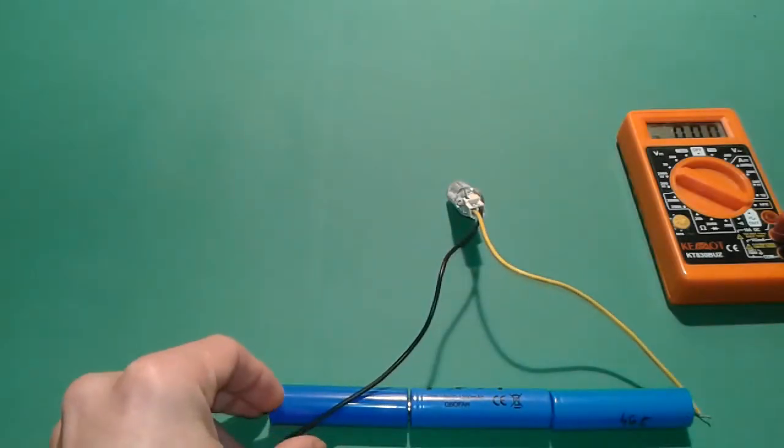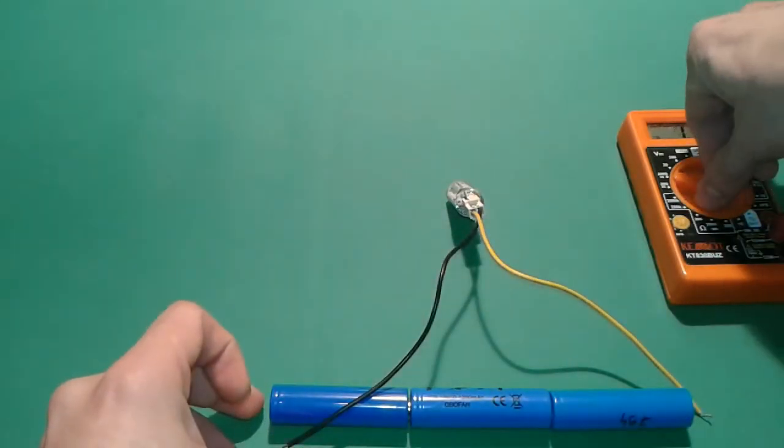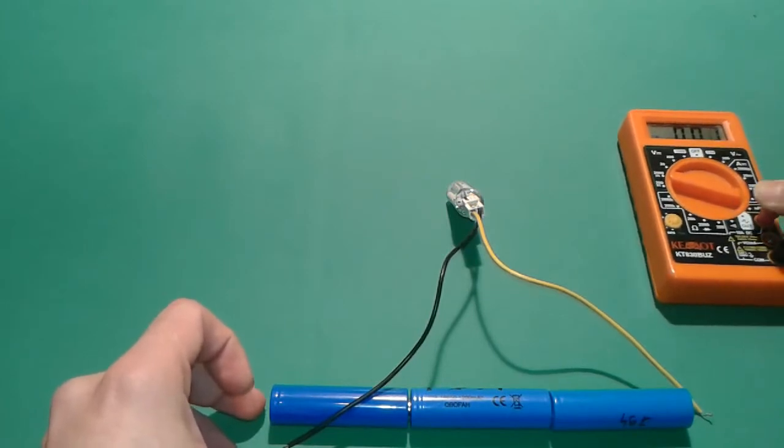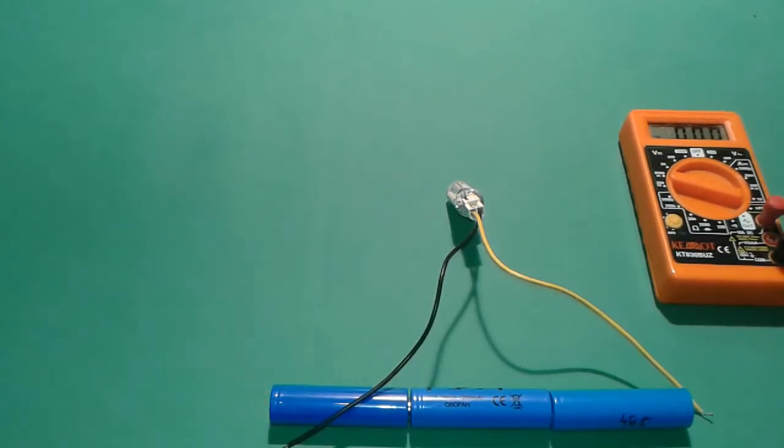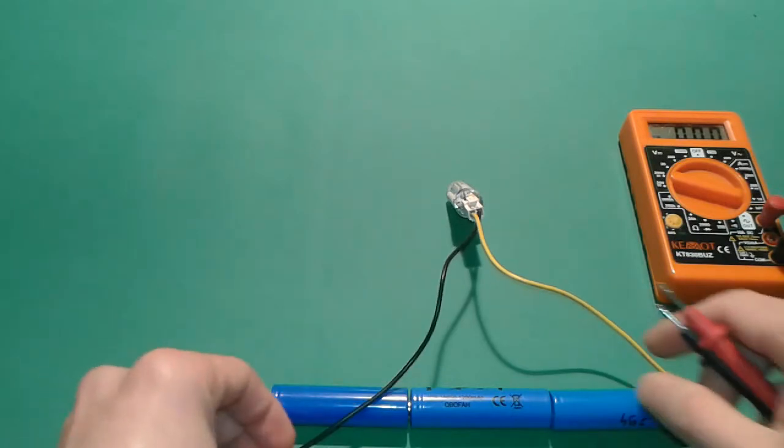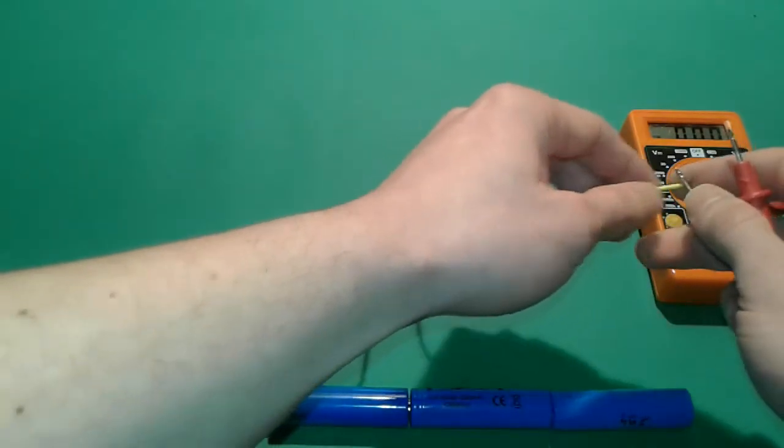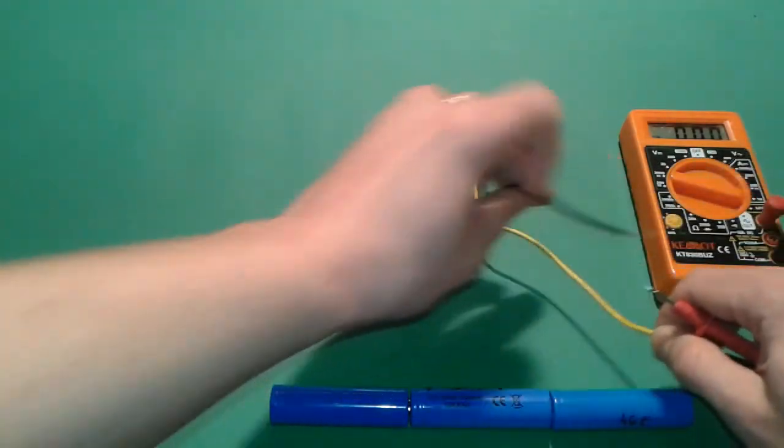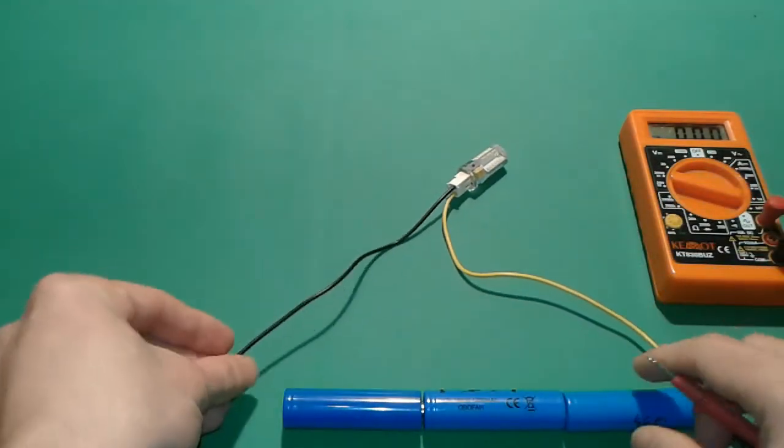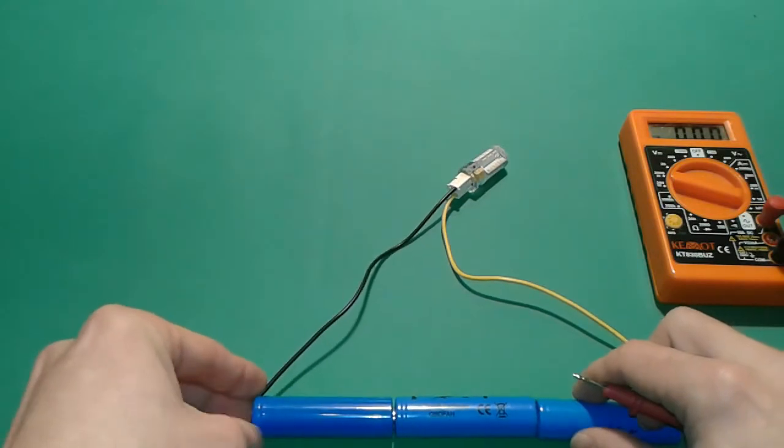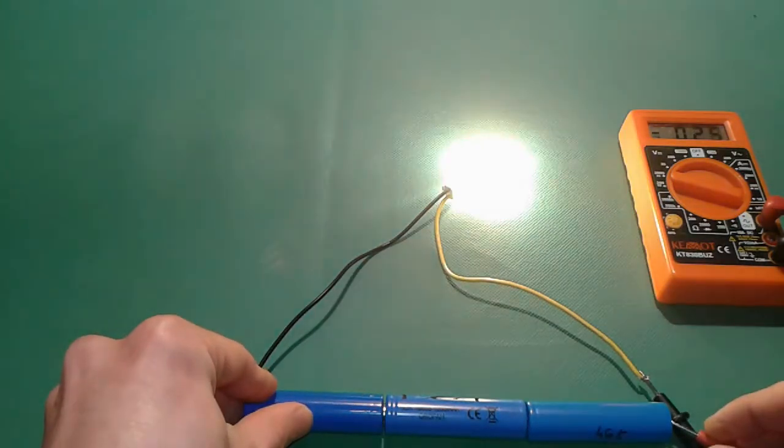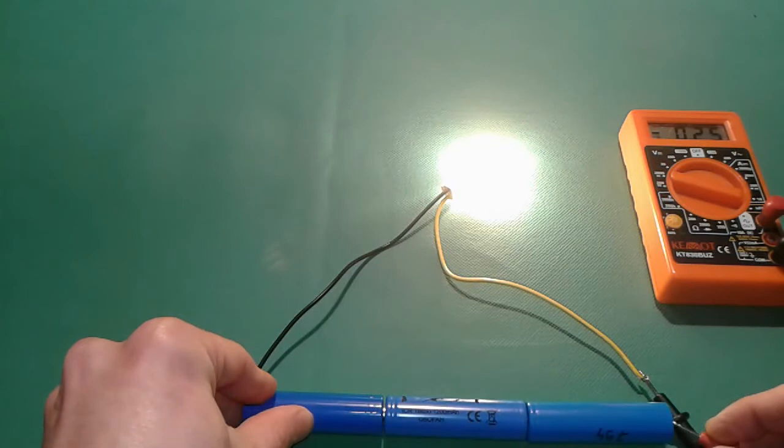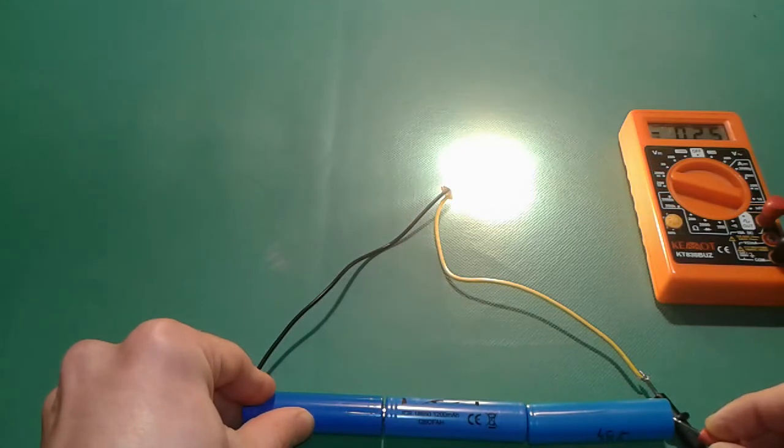Let's check to see how much current this is drawing. Should be a couple hundred milliamps but you can't be too sure. Alright, let's put it like so. We are in the current mode. So it's drawing 250 milliamps as you can see, and it's bright all over the sides.